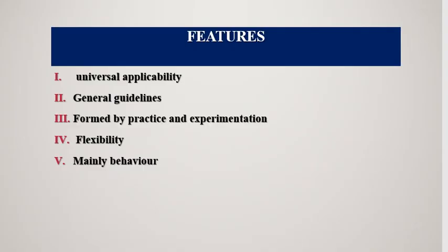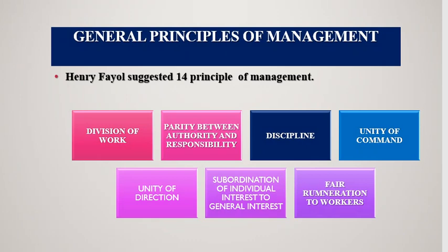Now we will understand the 14 principles given by Henry Fayol: Division of work; parity between authority and responsibility; discipline; unity of command; unity of direction; subordination of individual interest to the general interest; fair remuneration to the workers; effective centralization; scalar chain; order; equity; stability of tenure of personnel; initiative; and esprit de corps — which we will study one by one.